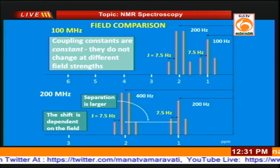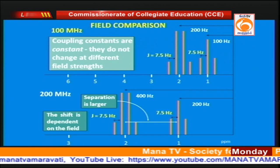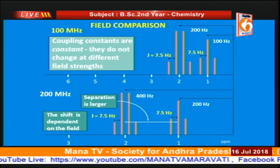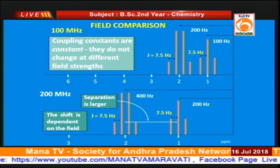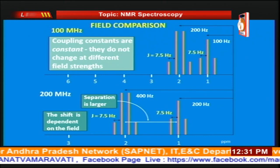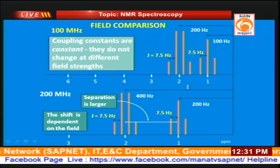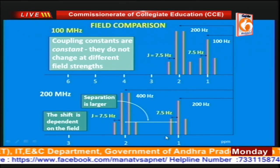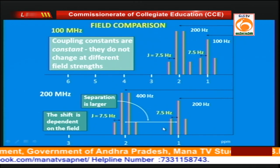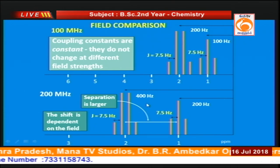The coupling constant values are field independent — whether you use a 100 MHz or 200 MHz instrument, the J values will be the same. Whereas the δ (chemical shift) values will vary from instrument to instrument.